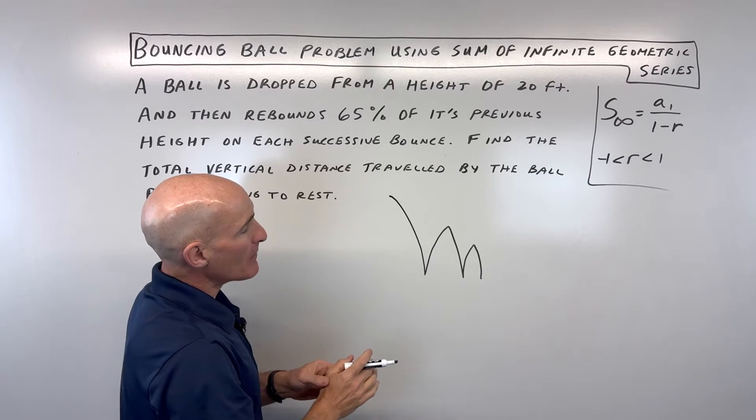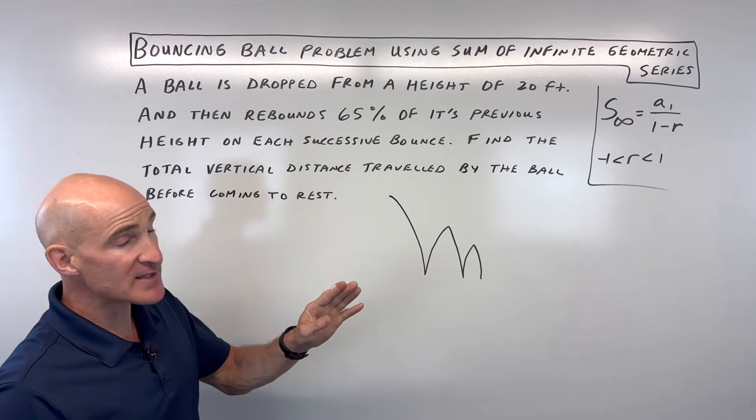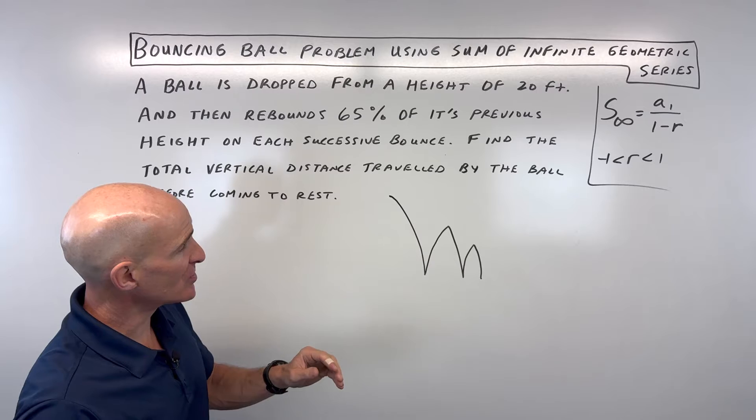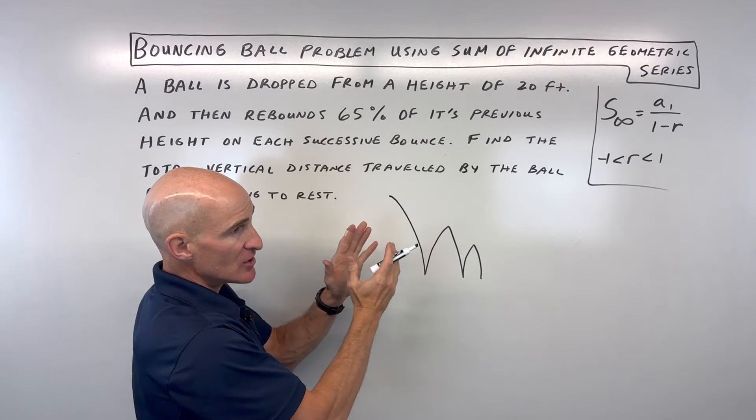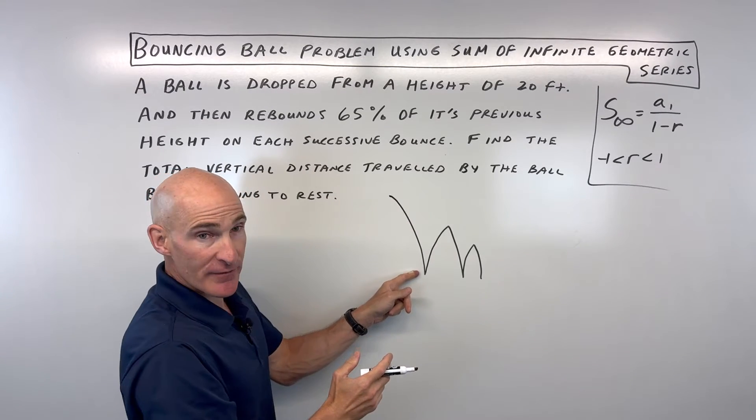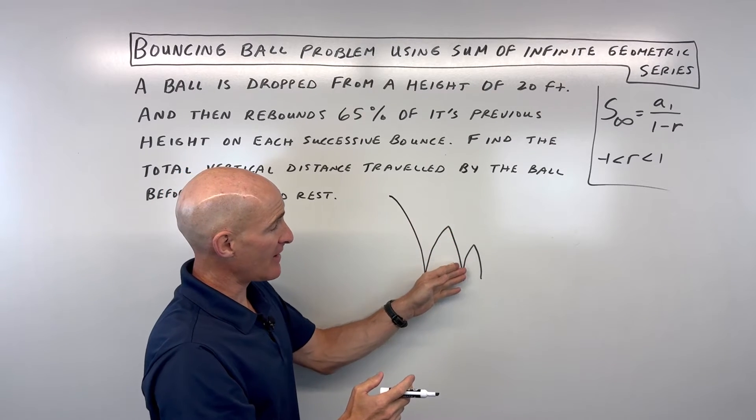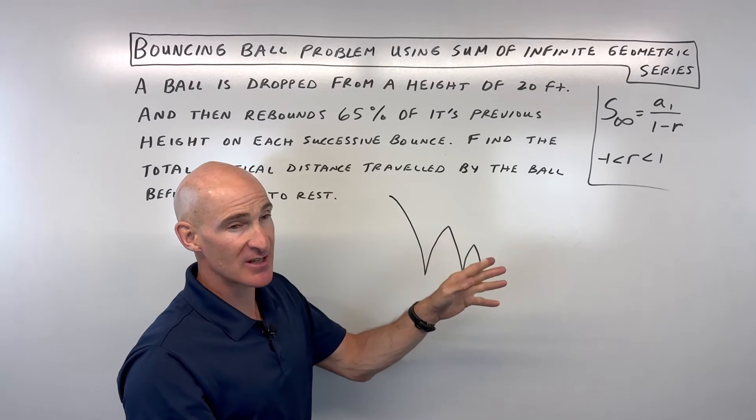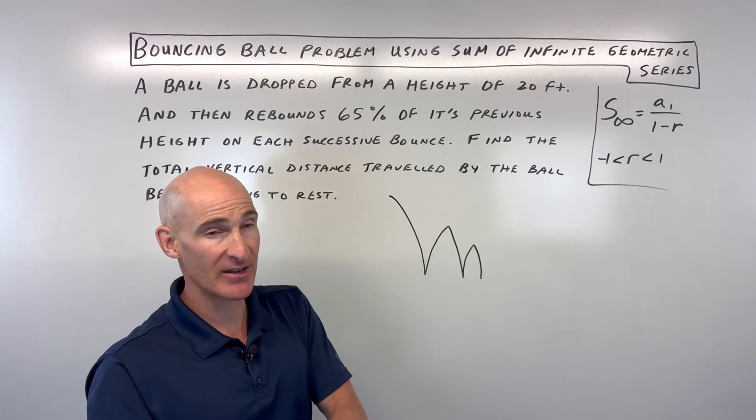What's interesting about this problem is it's a geometric series. You start off with falling 20 feet, then it goes up 20 times 0.65, then when it goes up the next time it's times 0.65 again.